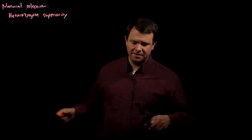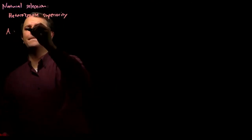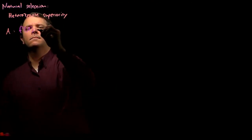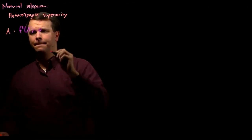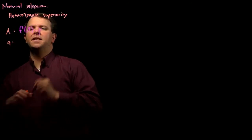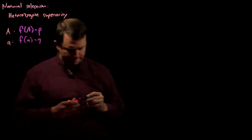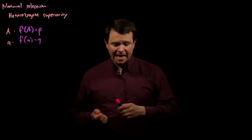So how does this work out mathematically? Let's say that the dominant allele A has a frequency of p, and that the recessive allele, little a, has a frequency of q.